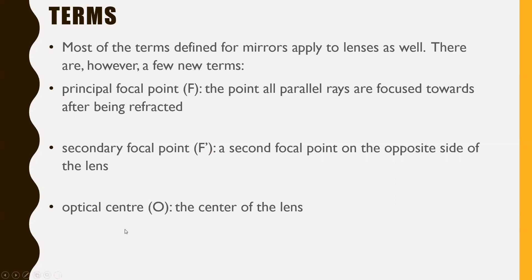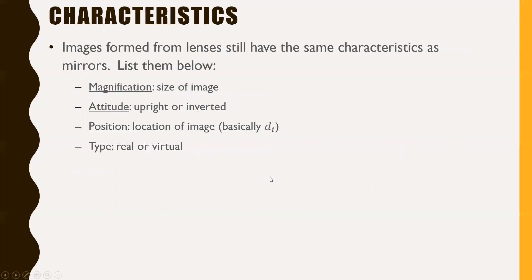The optical center is the center of the lens — this is basically the equivalent of V, the vertex for mirrors. The optical center O is inside the actual lens itself. Images formed from lenses still have the same characteristics: magnification is the size of the image, attitude is whether it's upright or inverted, position is the location of the image (your DI, the distance of the image), and type is either real or virtual.